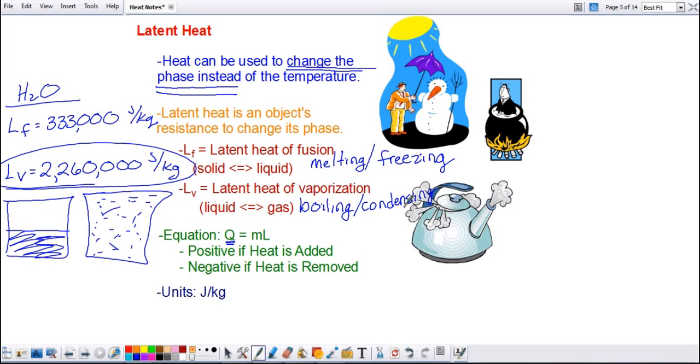One last note here is some vocabulary. You might hear this at some point or read it. If heat is being added, it's positive, and we call that an endothermic process. You can think of that with the prefix there, en. Heat is entering the system.